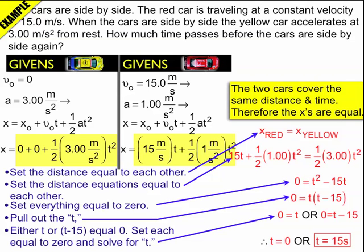So either t is equal to zero or t is equal to 15 seconds. That's my answer, 15 seconds. And t equals zero makes sense because they travel the same distance at t equals zero when they're side by side. So that answer actually makes sense too.